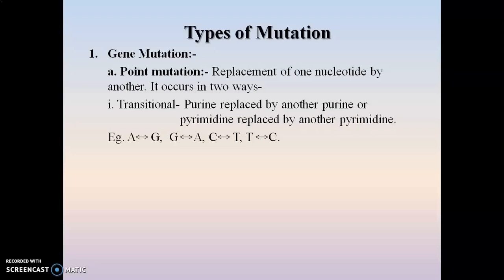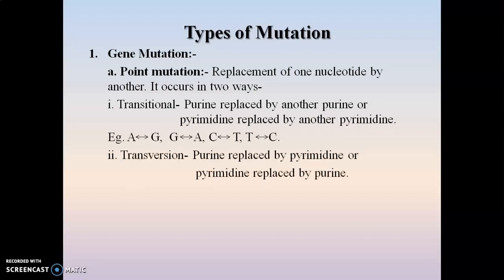The second way is transversion mutation, where there occurs replacement of a purine by a pyrimidine, or a pyrimidine is replaced by a purine — two different base types replace one another. For example, adenine is replaced by thymine or cytosine, while cytosine can be replaced by adenine or guanine, meaning pyrimidine gets replaced by purine.